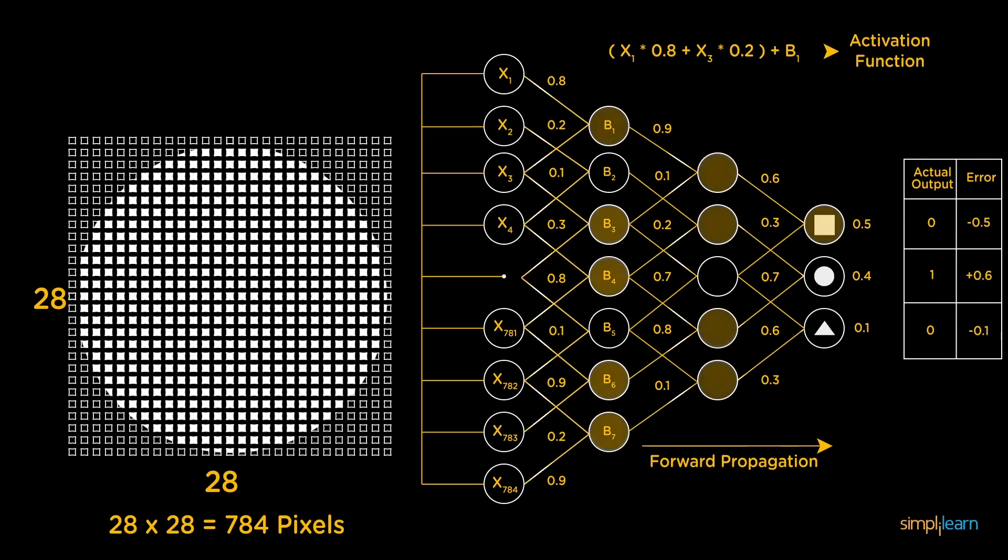The magnitude of the error indicates how wrong we are and the sign suggests if our predicted values are higher or lower than expected. The arrows here give an indication of the direction and magnitude of change to reduce the error. This information is then transferred backward through our network. This is known as back propagation.